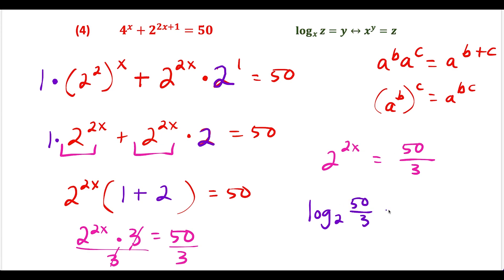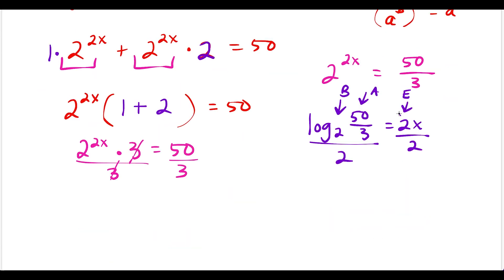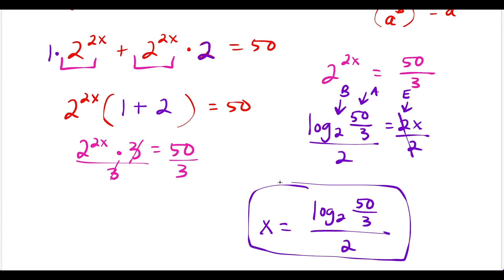This equals 2x — remember the theme: base, answer, exponent — BAE. To solve for x, divide everything by 2. After 2 over 2 cancels, our final answer is x equals log base 2 of (50 over 3), all divided by 2. This is our solution to question four.